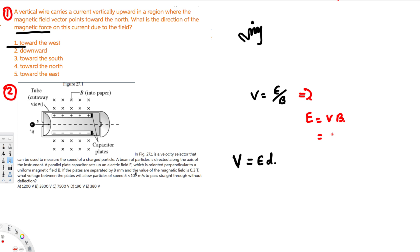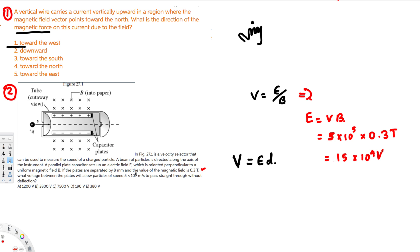Where v is velocity: that is 5×10⁵ meters per second, times the magnetic field, which is 0.3 tesla. Multiplying these together gives us 15×10⁴ volts per meter. Now we have to calculate the voltage between the plates.